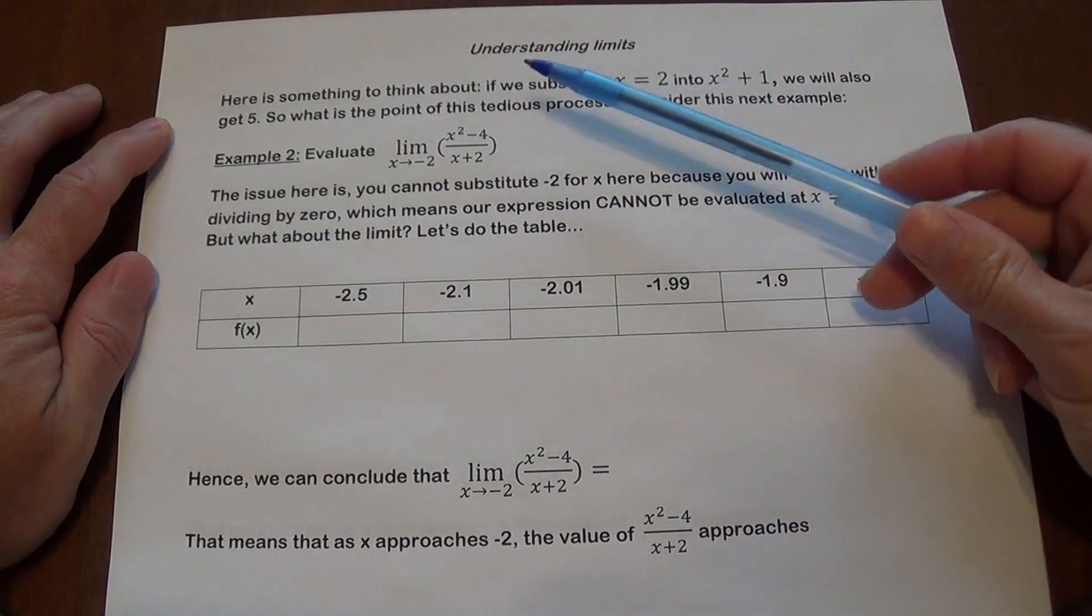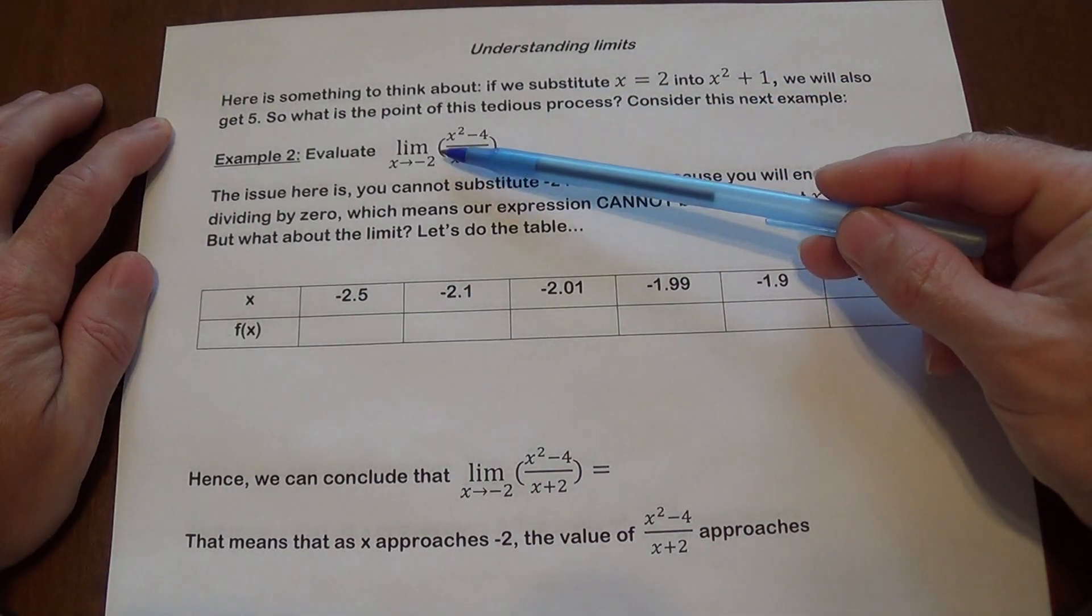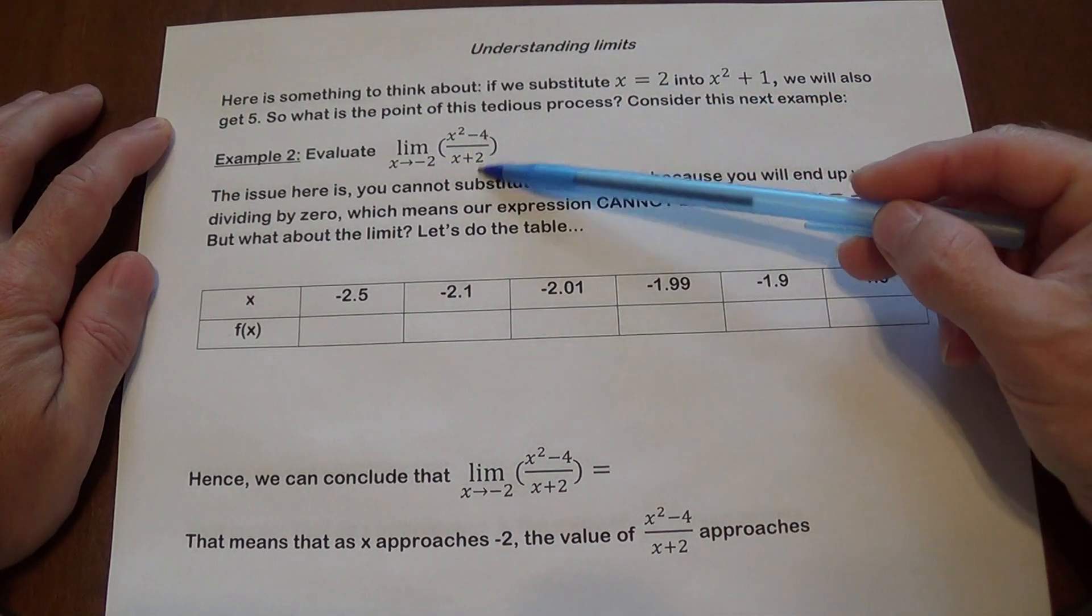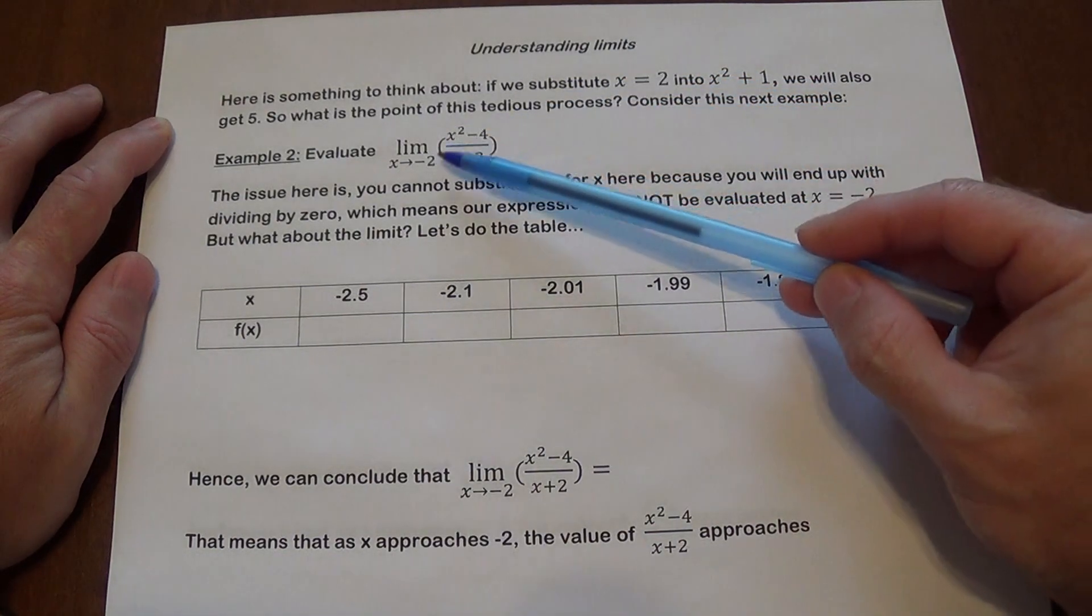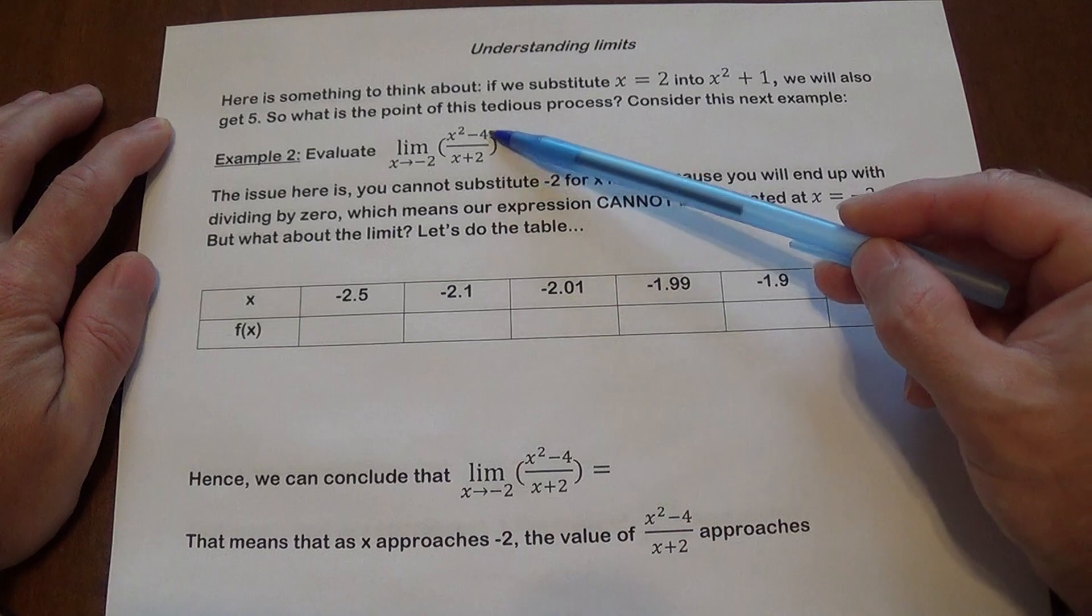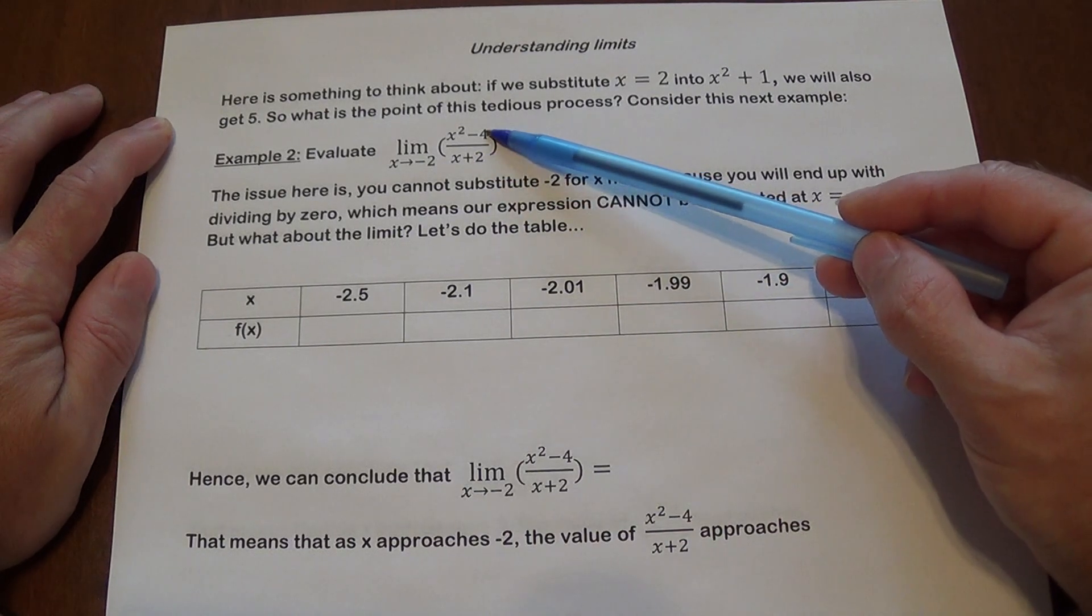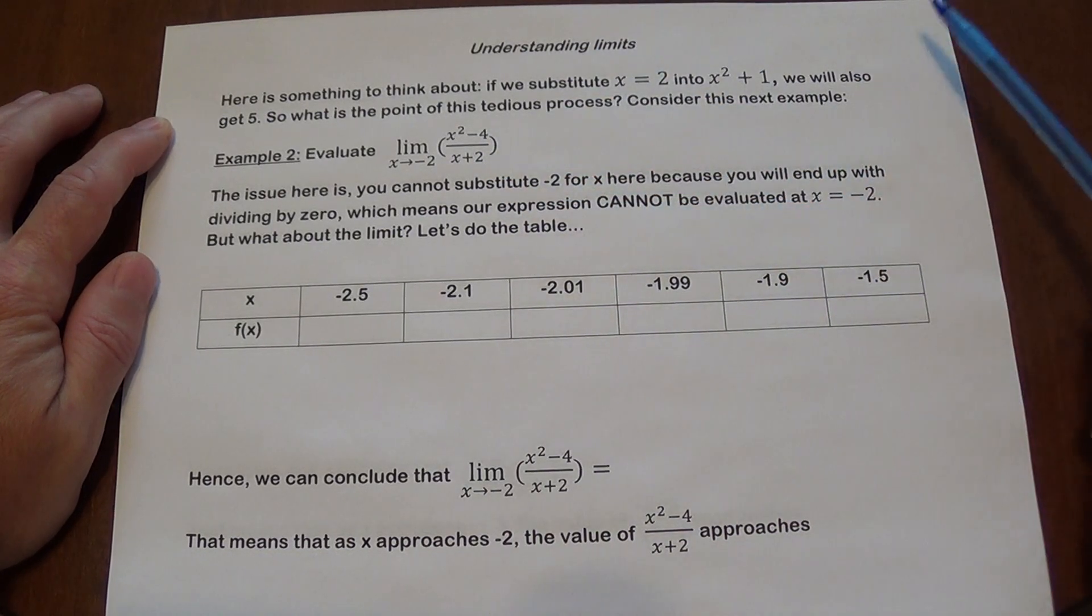So here is a problem. You get limit as x approaches negative 2 of this expression. And here is the issue. If you take negative 2 and substitute it here, you will get 0 on the bottom. You're actually going to get 0 on top as well. So you cannot just evaluate it at negative 2 by simple substitution.